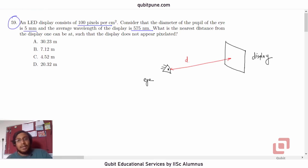They are saying the diameter of the pupil of the eye is 5 mm, so D is 5 mm. And what is the average wavelength of the LED display light? It is 575 nanometers. Let us immediately convert these into SI units. Nano is 10 raised to negative 9 and milli is 10 raised to negative 3.